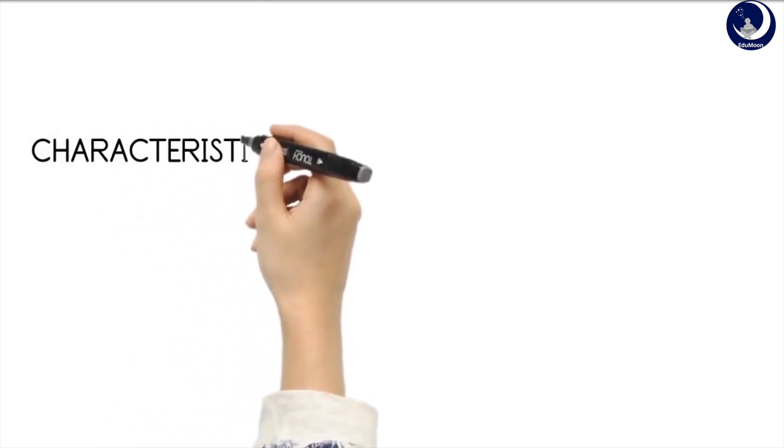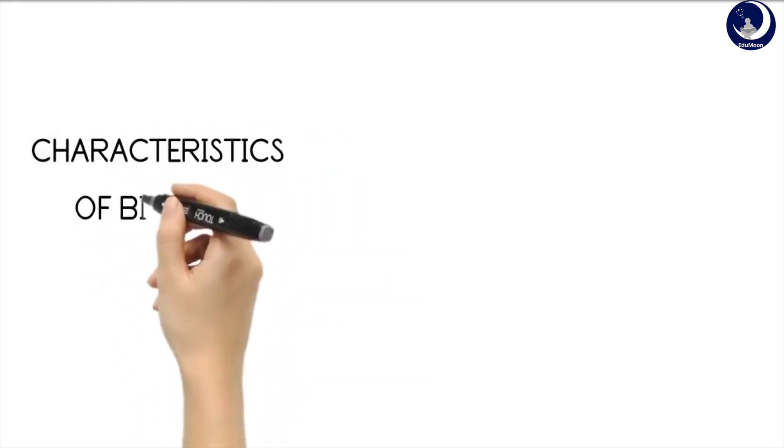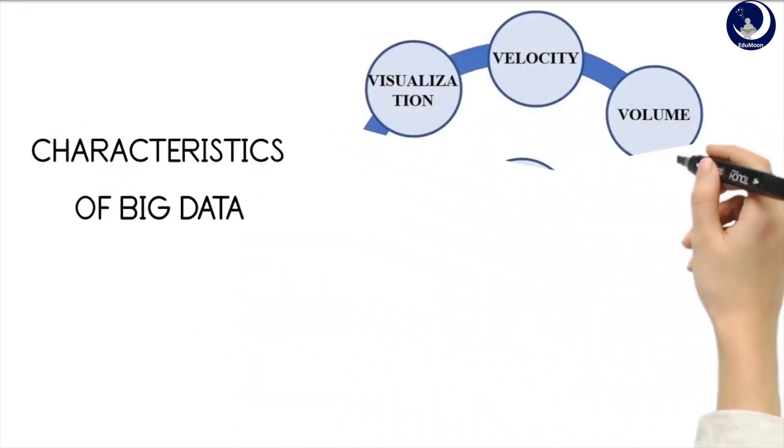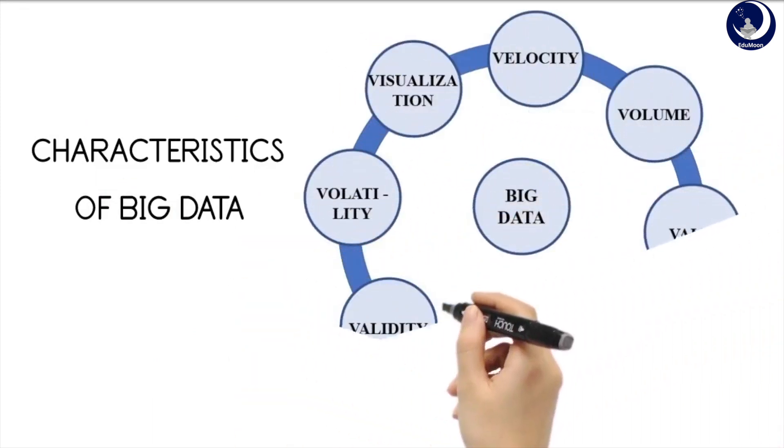Characteristics of Big Data comprise of 8 Vs, which are velocity, volume, value, variety, veracity, validity, volatility, and visualization.